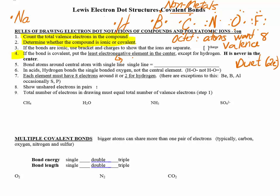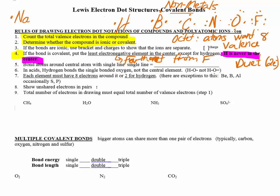The least electronegative atom goes in the middle. Fluorine is the most electronegative, so it will be furthest away from the center. Two very important rules: hydrogen is never ever in the center, and hydrogen never ever gets dots — hydrogen is too small. Don't put more electrons around it than it can hold; it can only have two, the duet.